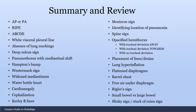White visceral pleural line, absence of lung markings, deep sulcus sign, pneumothorax with mediastinal shift — these are all signs of a pneumothorax, and the one with mediastinal shift would be a tension pneumothorax. Hampton's hump and Westermark sign are signs of a PE — not sensitive, but somewhat specific. Widened mediastinum is concerning for aortic dissection. Water bottle heart is what you get with a pericardial effusion.